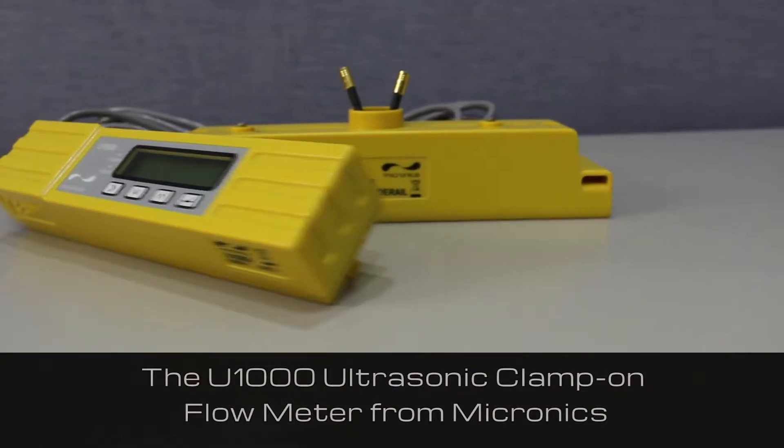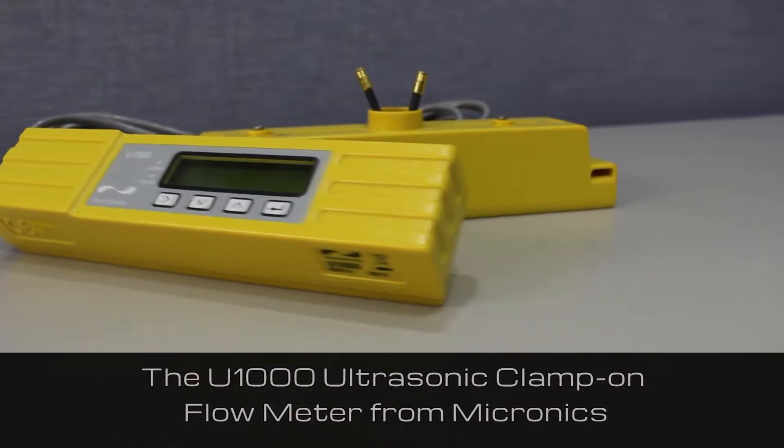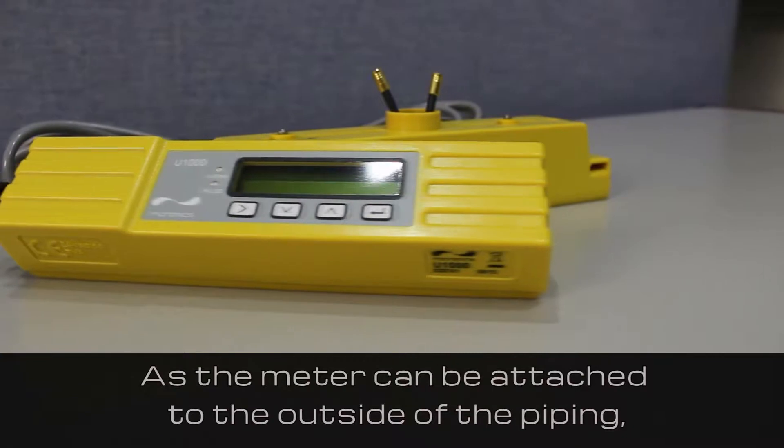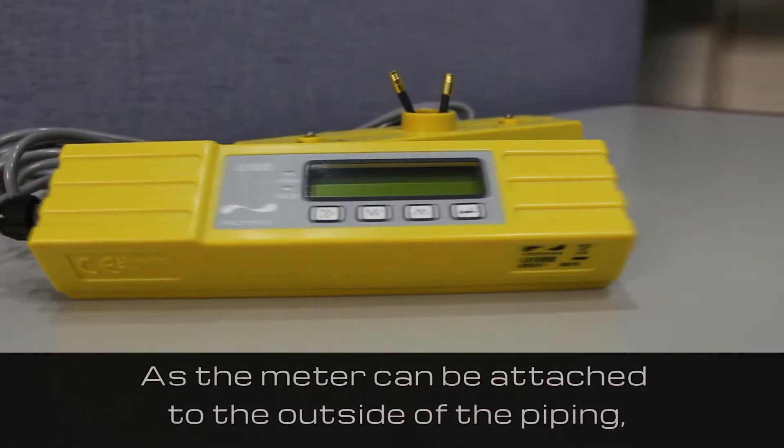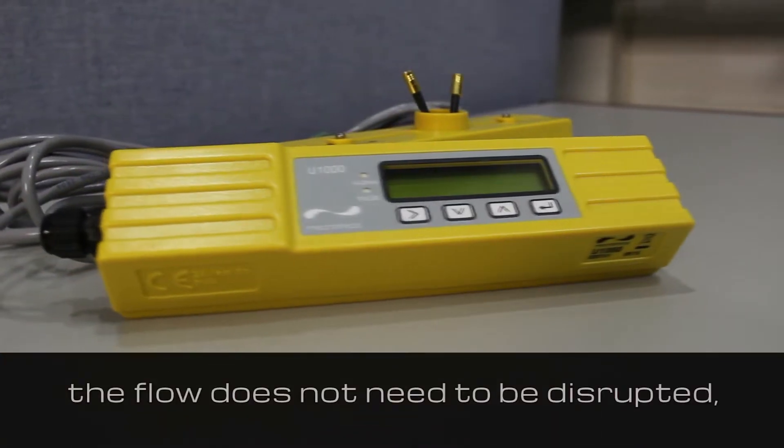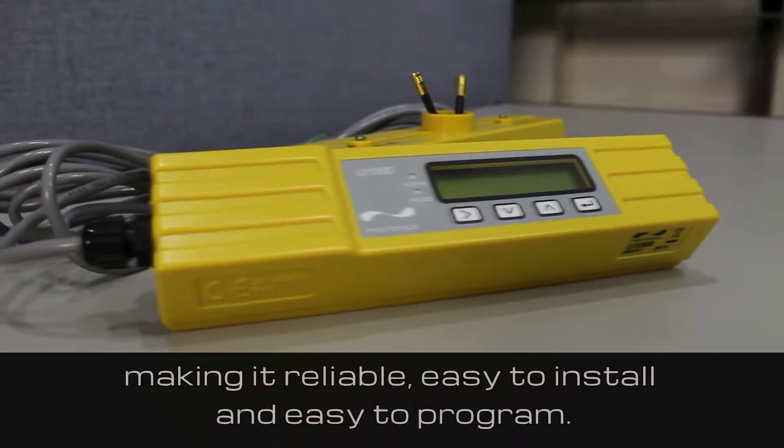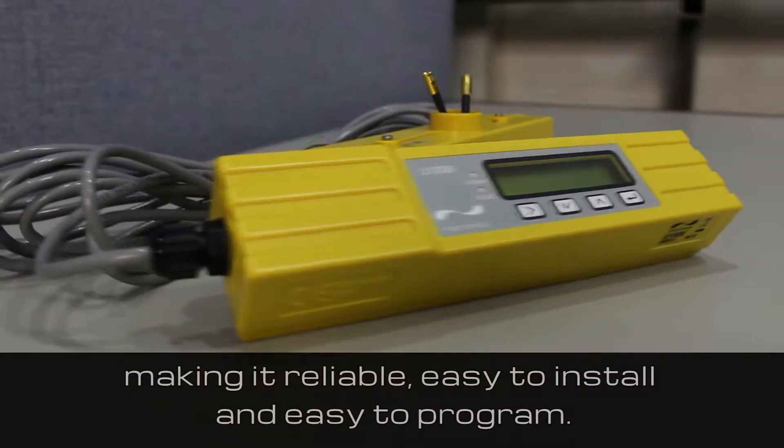The U1000 ultrasonic clamp-on flow meter from Micronix. As the meter can be attached to the outside of the piping, the flow does not need to be disrupted, making it reliable, easy to install and easy to program.